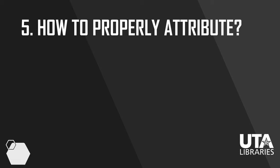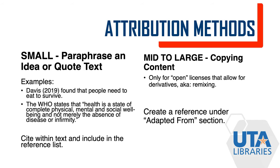Now that you're familiar with techniques for writing an OER chapter, let's discuss how to properly attribute. You can paraphrase and quote anything as typical, like you probably have experience doing in writing a research paper. However, if you use content from works with traditional copyright or licenses with no derivatives allowed, you must paraphrase and write in your own words. For other Creative Commons licenses, you can directly copy more substantial amounts of text, and instead of adding citations to each line, add the reference to the source under 'Adapted from' at the end of your chapter. If you follow these tips, you will be much more likely to write a successful chapter in an OER. Thanks for watching.